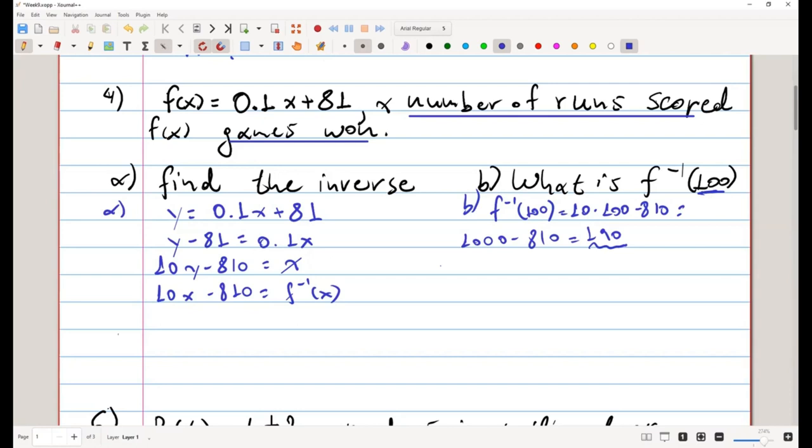Hence, what is f to the minus 1 of 100, which is 190, is the number of runs scored when 100 games are won. That is all for exercise four.